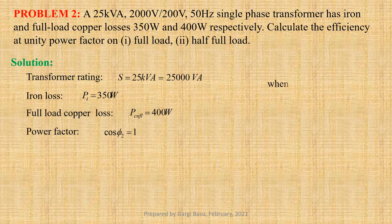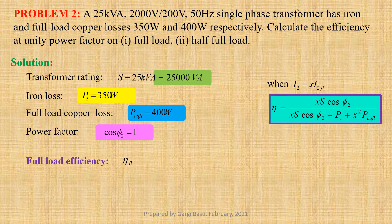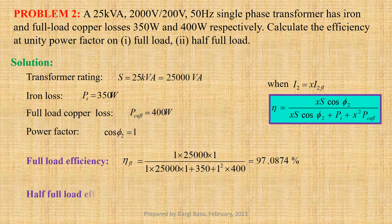When I2 equals to x times I2_FL, the efficiency ETA equals to x times S cos phi 2 divided by x times S cos phi 2 plus P_I plus x squared P_copper_FL. Full load efficiency ETA_FL equals to 1 into 25,000 into 1 divided by 1 into 25,000 into 1 plus 350 plus 1 squared into 400, that gives us 97.0874 percent.